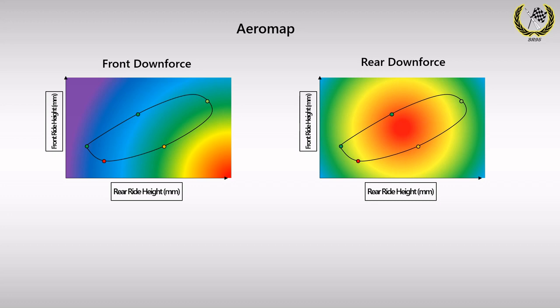The rake angle is the angle made by the floorboard of the car with respect to the ground, with the positive rake angle being the case where the rear ride height is higher than the front. In this particular case, the best trade-off seems to be a moderately high rear ride height with a relatively high rake angle for the car.